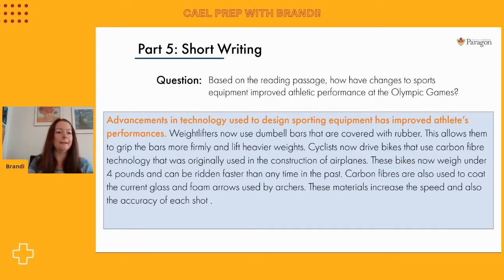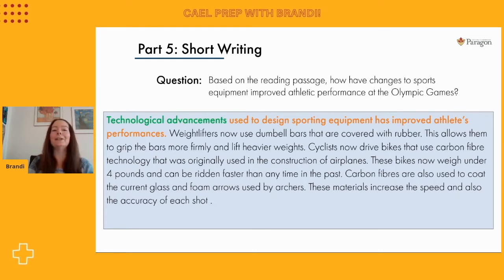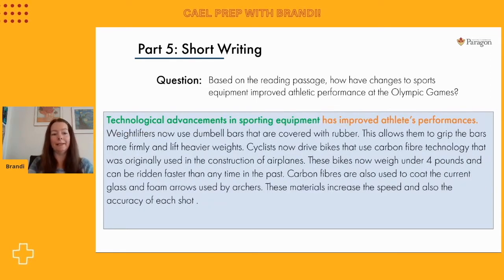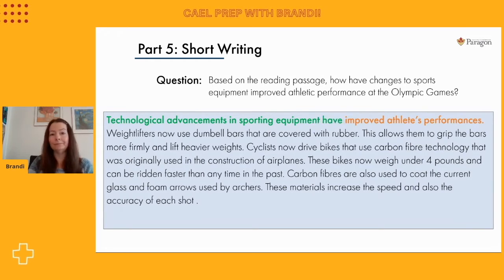Let's look at the language choices first. Right now it says: advancements in technology used to design sporting equipment has improved athletes' performances. If we reverse the order of these phrases and turn the word technology into an adjective, we get technological advancements — that sounds higher level. We can simplify to: technological advancements in sporting equipment. There's also a grammar mistake — a subject-verb agreement issue. The word 'has' is a singular verb, but the subject 'advancements' is plural, so we change that to 'have'. These advancements have improved athletes' performances.